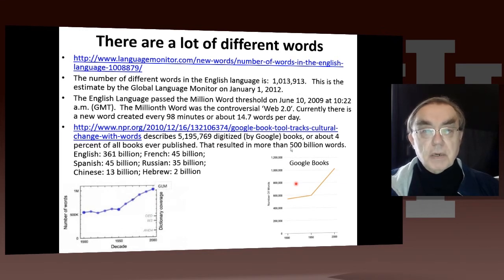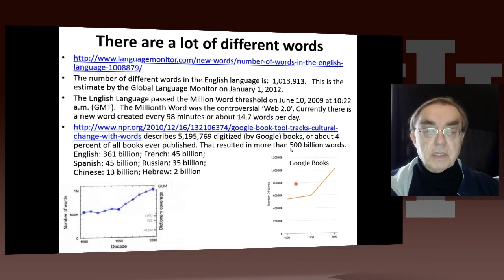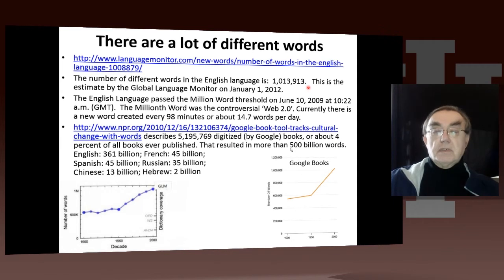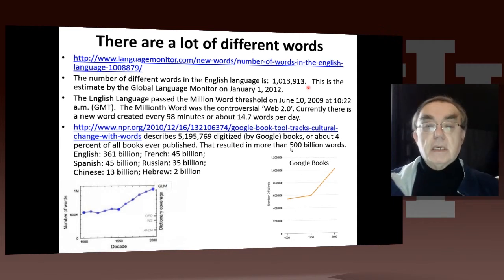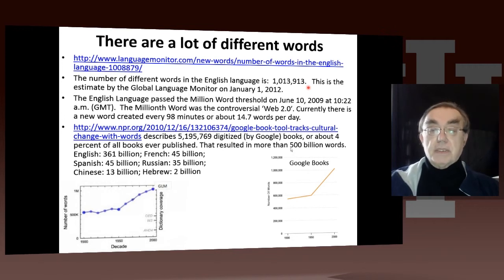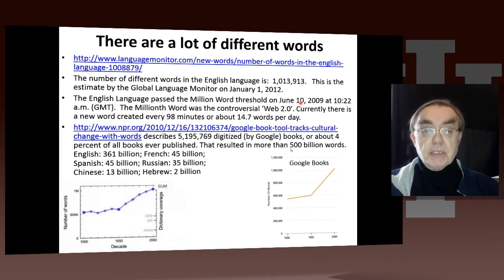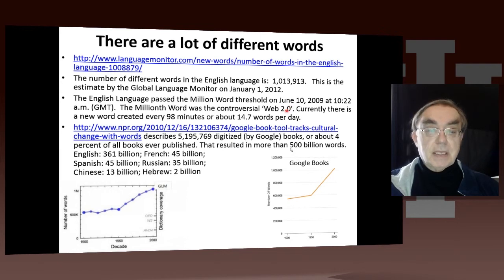When we go to the web, we'll have to take all these documents and divide them up into so-called tokens and terms. The number of terms is roughly the number of different words. Here we have some measure of the number of words, which is around a million in the English language. So all the documents are going to be classified by what words they have and how many entries for each word. According to one survey, in 2009 the English language crossed the million-word threshold, and that millionth word was the interesting term 'Web 2.0.' Currently, a new word is created every 98 minutes.